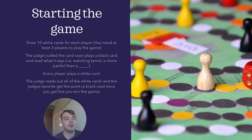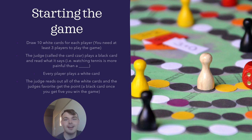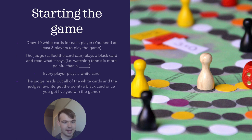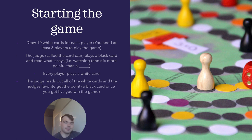The judge plays a black card, for example: 'Watching tennis is more painful than blank.' Every player plays a white card. The judge reads out all the white cards and their favorite gets a point — represented by receiving a black card. If you get up to five points, you win the game. It's a really fun party game, great if you have people over or want to play it online via the phone app.